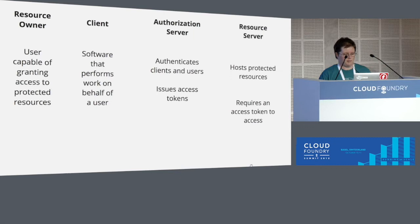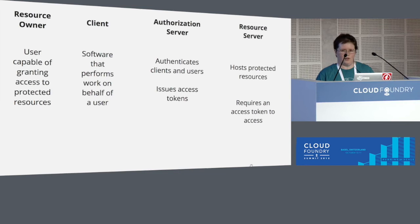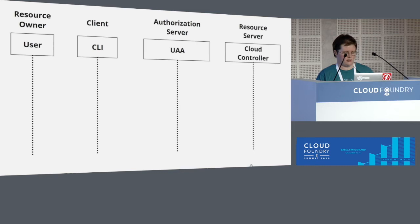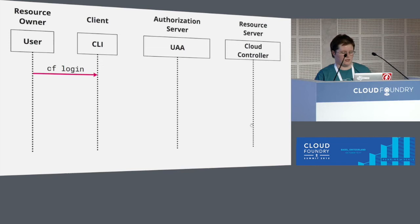The OAuth standard describes four different roles involved in that type of thing. The resource owner is the user. The client — the thing that wants to perform actions on your behalf — is going to be the CLI itself. The OAuth server is the UAA, whose job is to authenticate users, verify that they are who they say they are because they provided username and password, keep track of what permissions users have, and know how to issue and validate tokens. Finally, the resource server is any API that requires a token to access it.